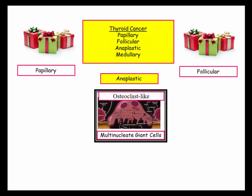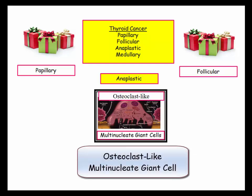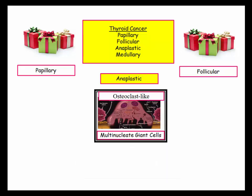Anaplastic is rarely the primary focus of a question. The pathologic features are quite characteristic and most often appear as a distractor. The hallmark pathologic feature is the osteoclast-like multinucleate giant cell. Remember the giant cell of granulomatous thyroiditis? Here's the other presentation of giant cells in thyroid disorders.